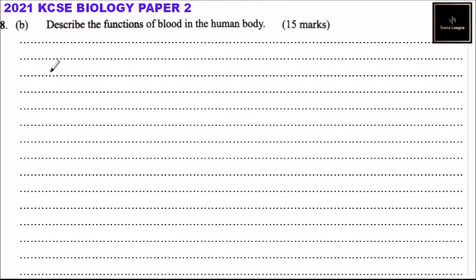Question number eight B: describe the functions of blood in the human body. Blood is made up of several components: plasma, red blood cells, white blood cells, and platelets. We will describe each component and its function, starting with plasma.